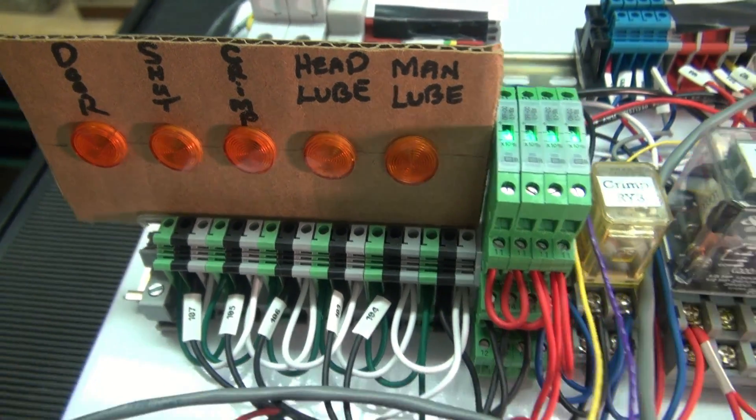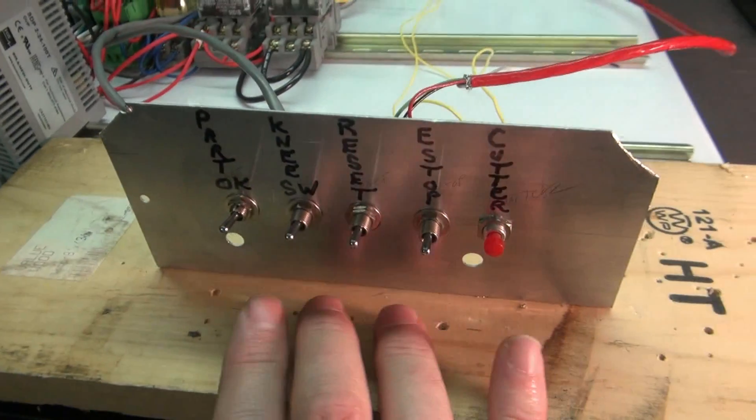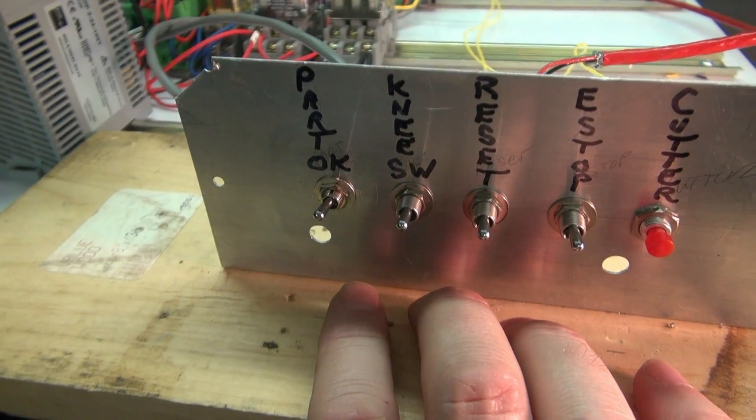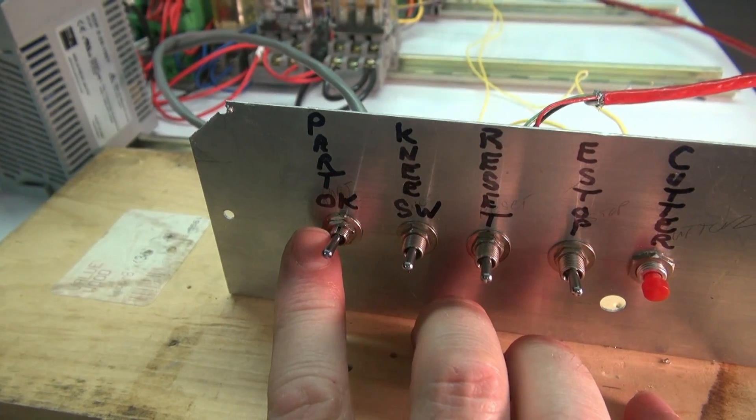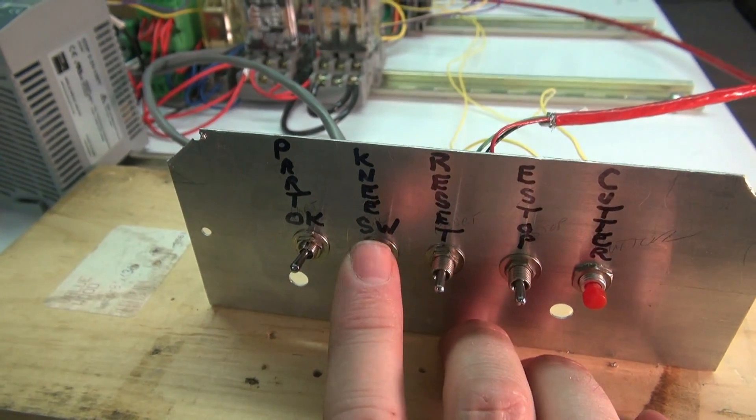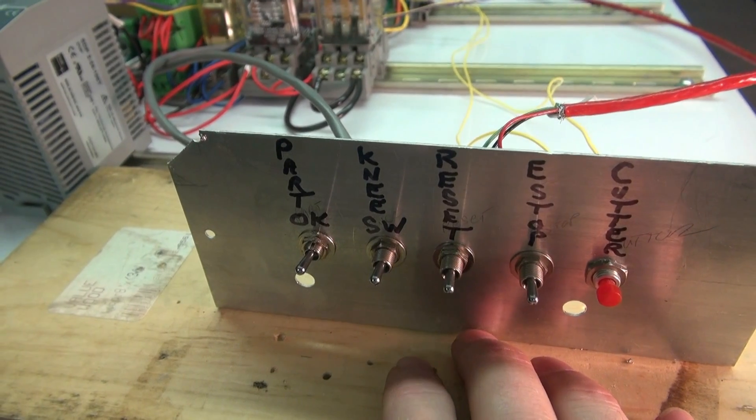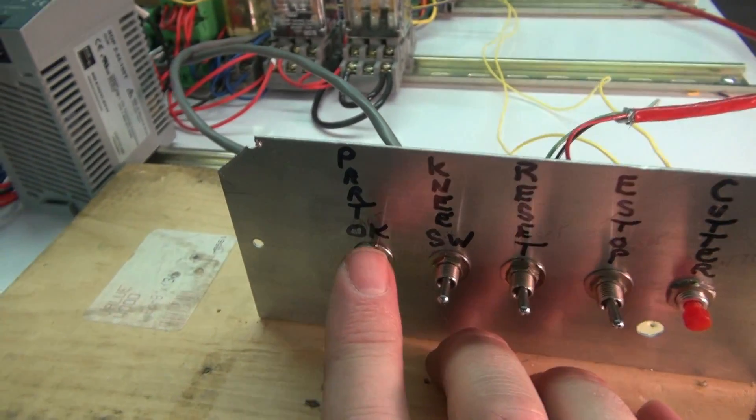That was a crimp operation. Now let's say that there is no part being detected by the fiber optic. Right now we're saying the part's okay which means we can crimp.